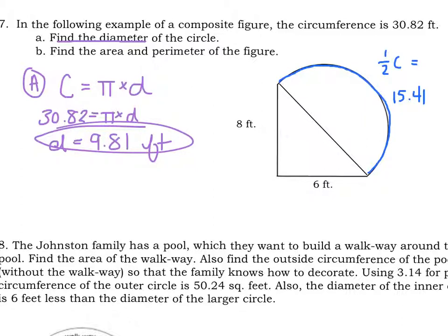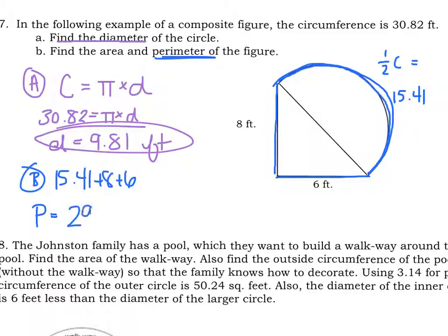Part B says, find the area, find the perimeter. I'm going to start with perimeter since it's a little easier. Perimeter is the outside. So we already have our half circle. We know it's not all our circumference. It's just part: 15.41. If we keep going around, we have to add in that 8 and 6. So plus 8, plus 6. And perimeter gives us a grand total of 29.41 feet.